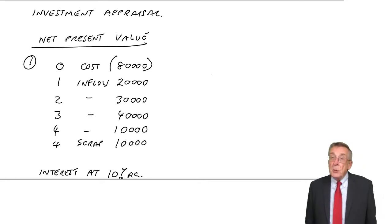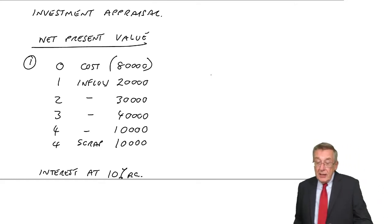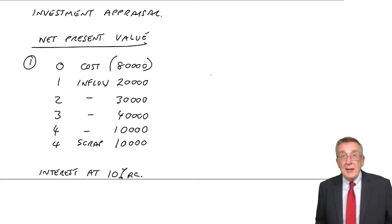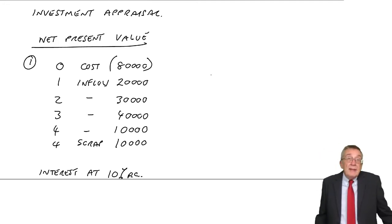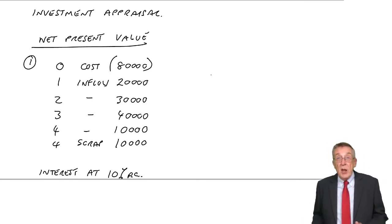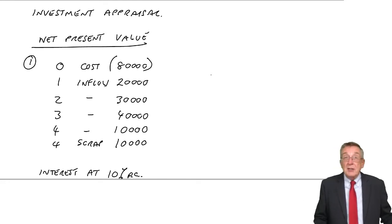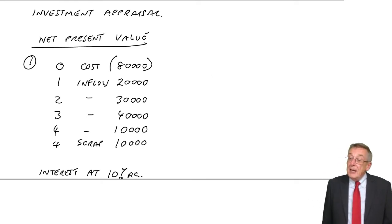We need to account for the interest. The net cash is going to be less. Because either we have to borrow the £80,000 and so we're having to pay interest. Or even if I've got £80,000 already, the £80,000 presumably could have been earning me interest. And if I use it to buy this machine, I'm losing interest.